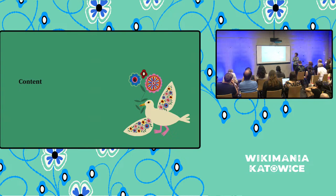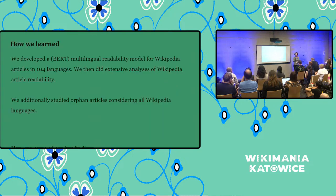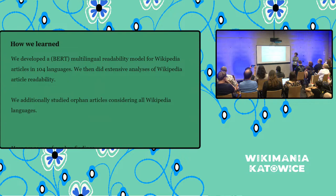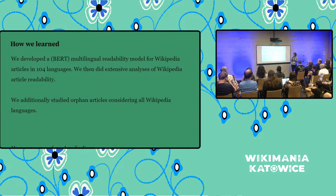Now let's talk about content. What I'm going to share is based on two general studies. One: we developed a BERT multilingual readability model for Wikipedia articles in 104 languages — basically a model that can say how readable an article is on Wikipedia. We then did an extensive analysis of the state of articles in these languages to better understand the state of readability. We care about this because we think readers are not getting the kind of information they're looking for on the projects, and if they don't get it here, they may go somewhere else.